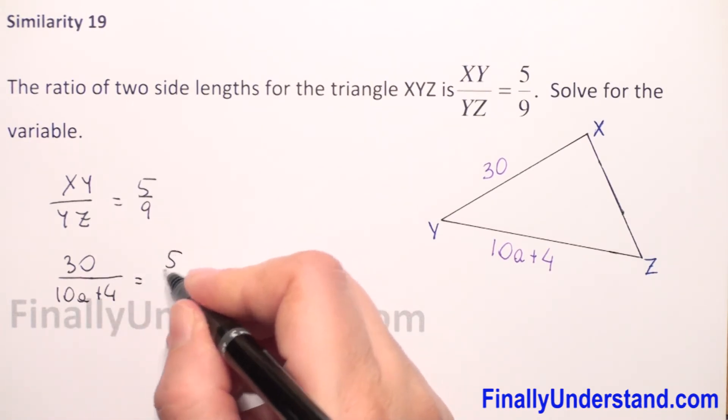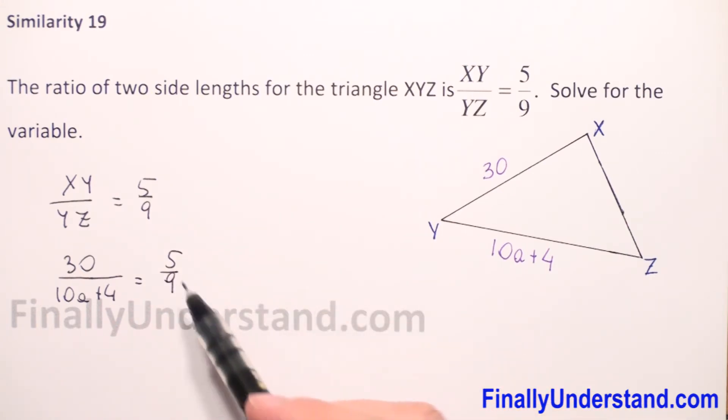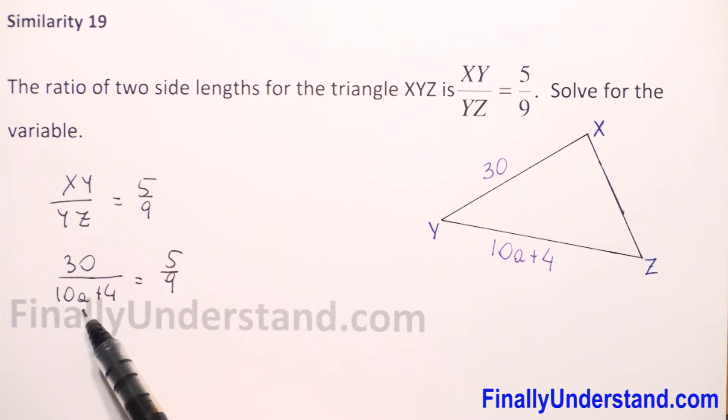So this is 5 over 9. We have a proportion with one unknown, a.